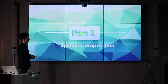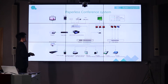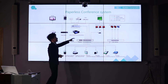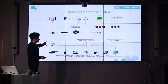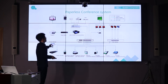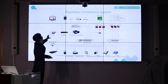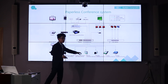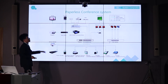Part 2 is the system composition. This system consists of touch screen terminals and the conference video server for the paperless conference system. The server controls all the paperless conference terminals and also controls the signal routing for the projector and camera. All the devices are connected by a network switch, so it is network-based and very easy to install.